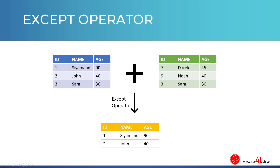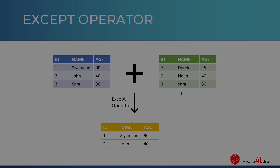Let me explain with an example what the EXCEPT operator does. Let's say we have Table A and Table B. From the left table we have three rows and from the right table we have three rows as well. ID number three has been repeated in the right table. When we use the EXCEPT operator, it will return all the rows from the left table and remove the rows that are repeated in the right table — so row number three is removed.